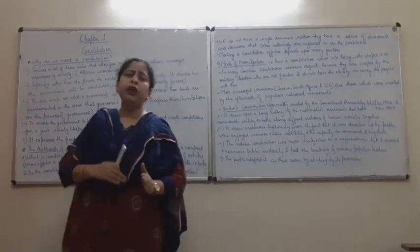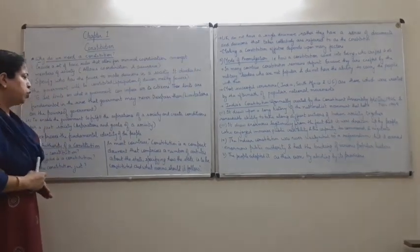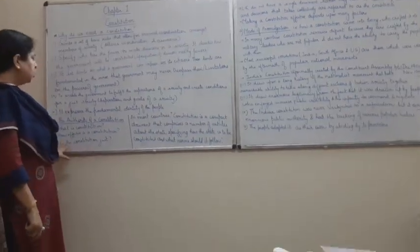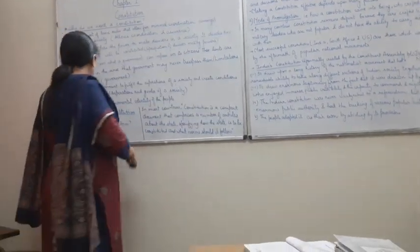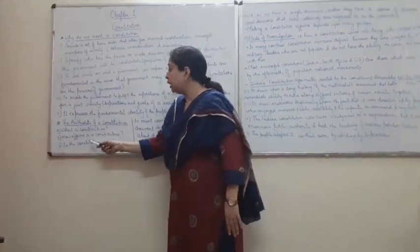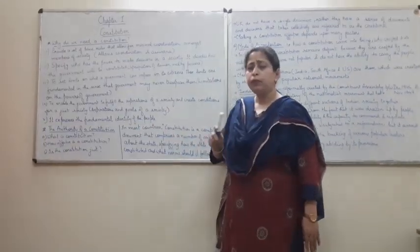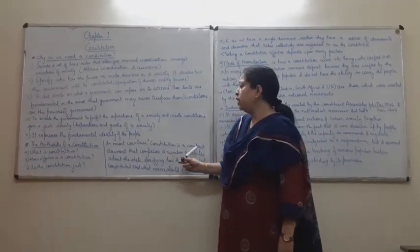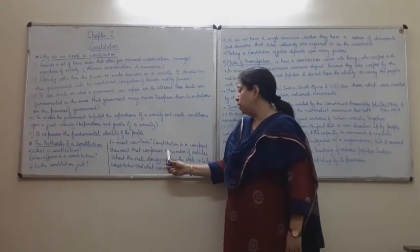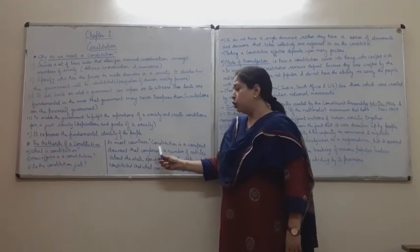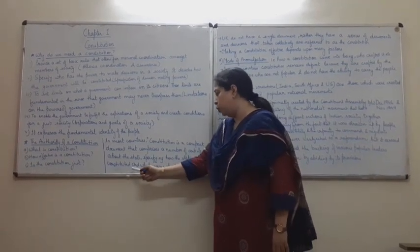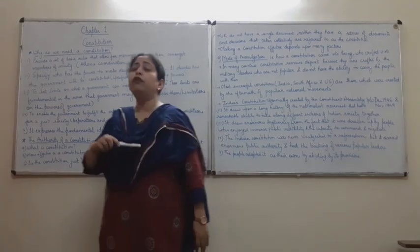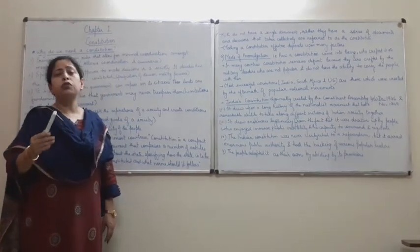Now, before we go to the other topic in detail, a minor thing - the authority of the constitution is based on three major factors. First, what is the constitution? Second, how effective is the constitution? And third, is the constitution just? Before answering all these questions, I would like to tell you that in most countries, constitution is a compact document that comprises a number of articles about the state, specifying how the state is to be constituted and what norms should it follow. One thing I would like to tell you is that different countries have different aspects on which their constitution is based.